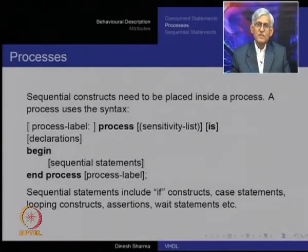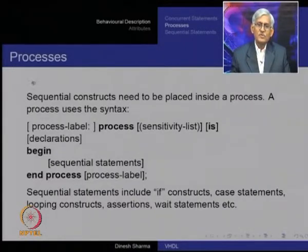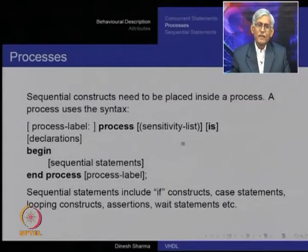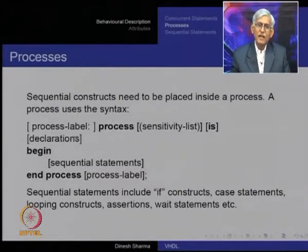Those were concurrent statements. However, you may have complicated assignments which require a multi-line description — such constructs are called sequential constructs. The entire sequence of lines has to be executed and must be placed inside what is called a process. A process uses the syntax: an optional process label, then the keyword 'process', followed by a sensitivity list, then the keyword 'is', then 'begin' and 'end process'. The actual components have two halves: variable/signal declarations local to the process, and the actual logic described using sequential statements enclosed between 'begin' and 'end process'.